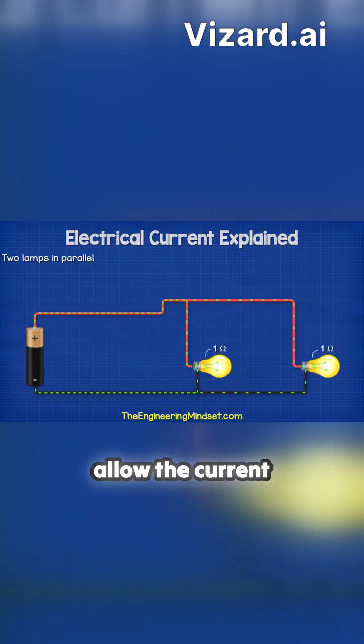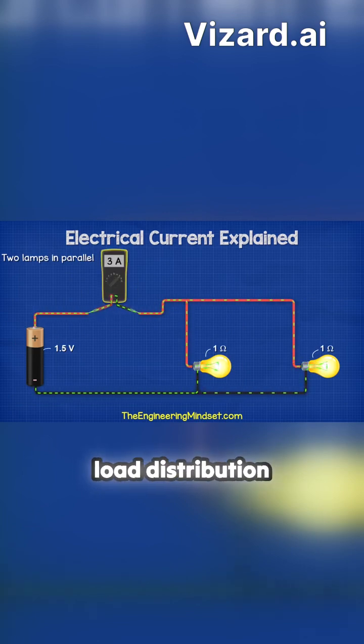Parallel circuits allow the current to split, resulting in varied readings across branches, which is crucial for understanding load distribution within electrical systems and how components interact.